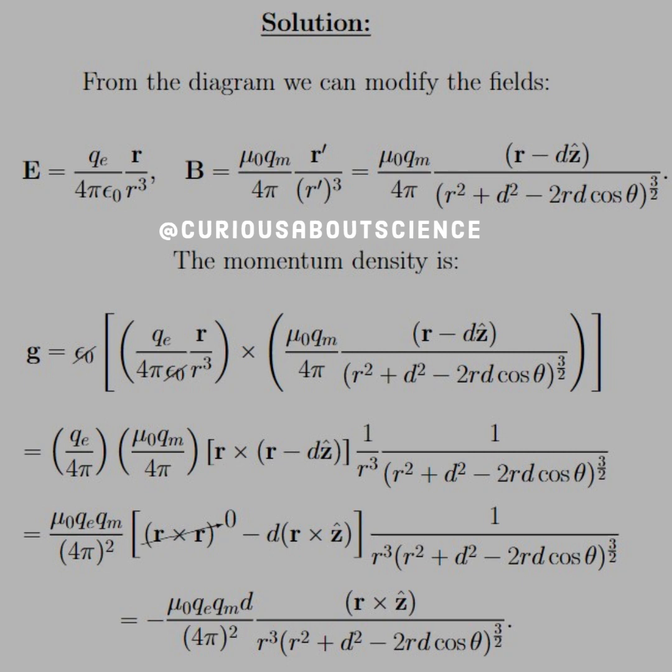So E goes to QE over 4 pi epsilon naught vector R over R cubed, which we can turn into a unit vector by taking the magnitude and getting rid of one of the R cubes. But similarly, B is equal to mu naught QM over 4 pi R prime R prime cubed. Now, if we want to write this in terms of the electric fields R, then we need to take into account R prime is R minus D in the Z-hat direction. And then we have to use law of cosines. So R squared plus D squared minus 2RD cosine theta to 3 halves power, since that's the square root.